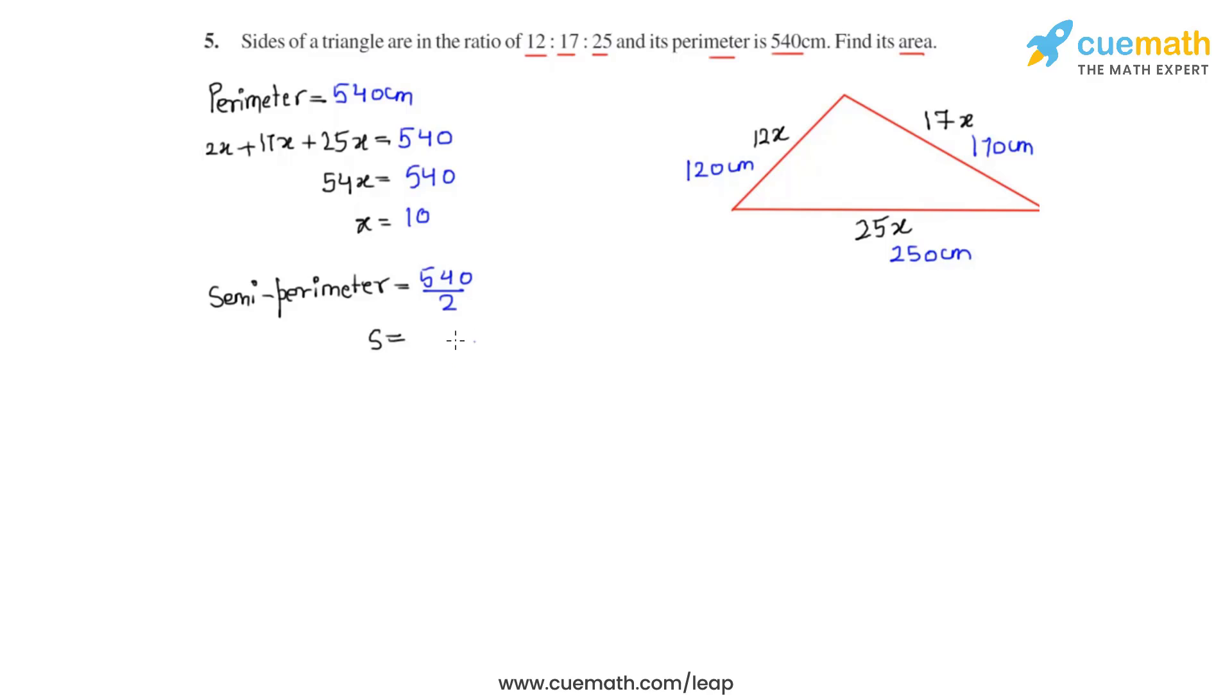Now we can write the Heron's formula so that we can find the area of the given triangle. So we write A equals under root s times s minus a times s minus b times s minus c centimeter square. As we know all of these values let's plug them in.